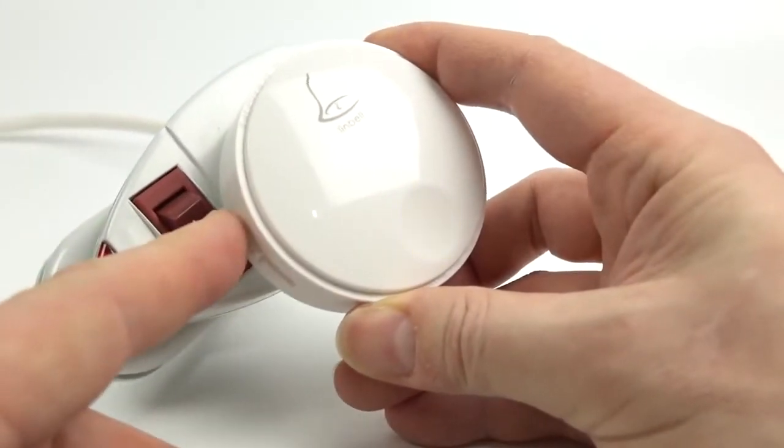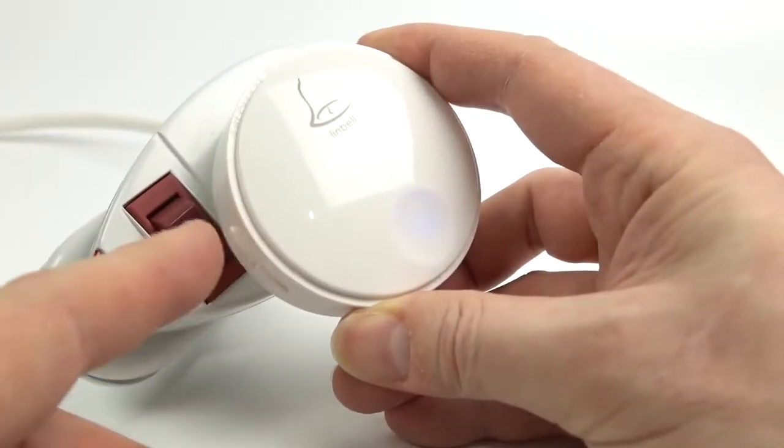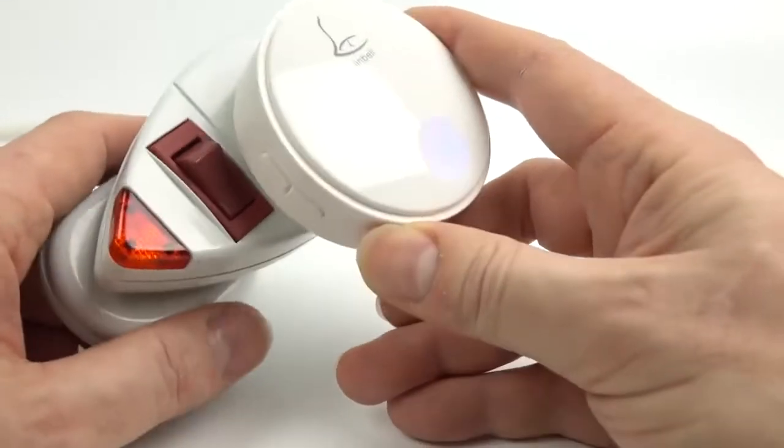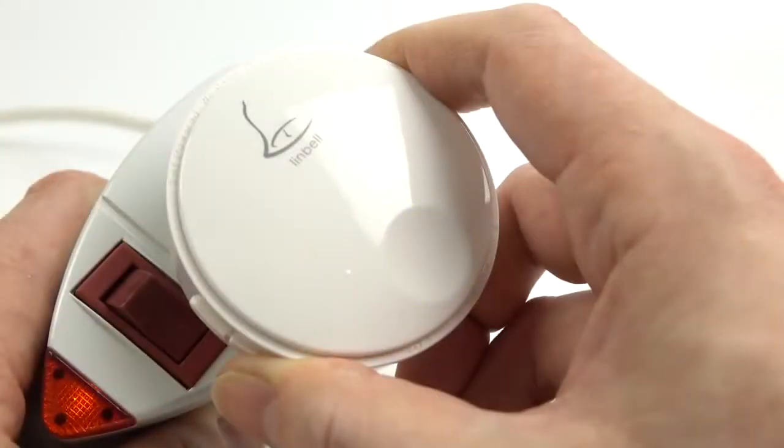You can adjust the volume of the ringer unit as well as have multiple ringer units attached to the one bell push, so you can put them all over the house if you want and add extra ones in later.